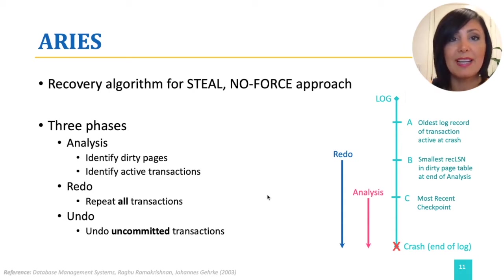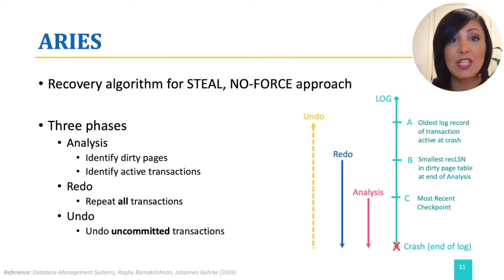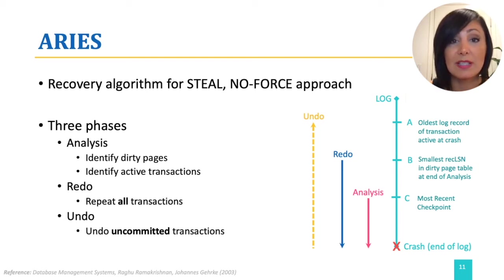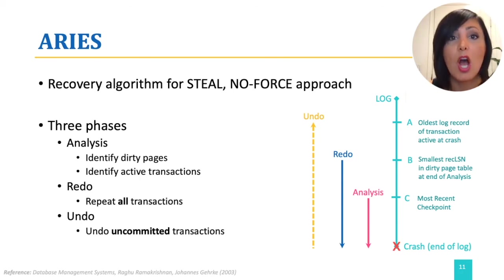And finally, it is time for the undo step, where the actions of transactions that did not commit are undone. This is traced back to the oldest log record among all transactions that were active when the crash happened. Notice that undo is in the reverse order. So we first redo everything and then undo what was not yet committed.